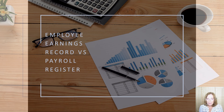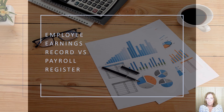In this video, we'll look at the employee's earnings records, which forms the link between the accounting and the human resource departments, and we'll compare it to the payroll register. In a separate video, we'll use the payroll register to record the payroll journal entries.